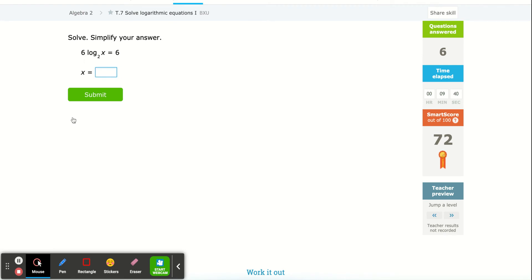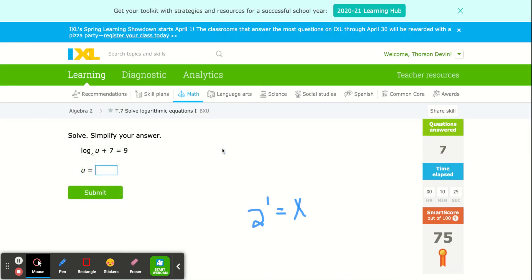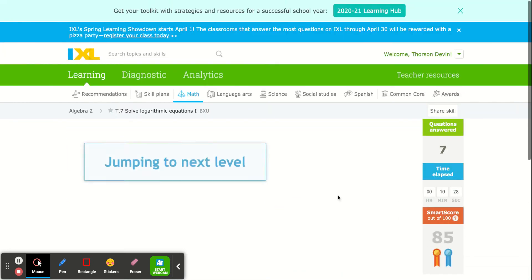Here we divide by 6 first. I divided both sides by 6, getting log base 2 of x equals 1, then changed it to exponential form. 2 to the 1 equals x, or x is 2. Sometimes there's a little algebra beforehand. I'm going to jump ahead.